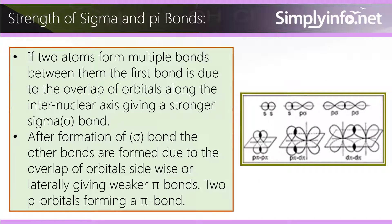Strength of Sigma and Pi Bonds: If two atoms form multiple bonds between them, the first bond is due to the overlap of orbitals along the internuclear axis, giving a stronger sigma bond. After formation of the sigma bond, the other bonds are formed due to the overlap of orbitals sidewise or laterally, giving weaker pi bonds — for example, two p orbitals forming a pi bond.